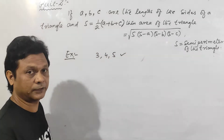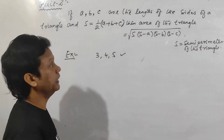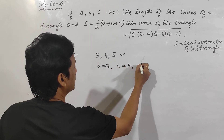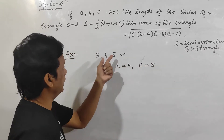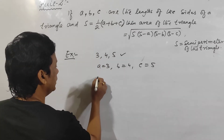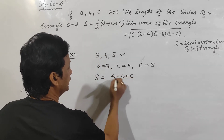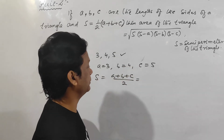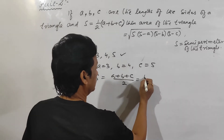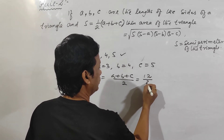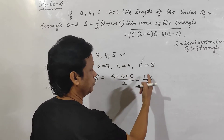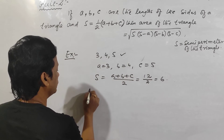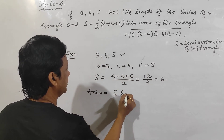Let us find out. Here a is equal to 3, b is equal to 4, and c is equal to 5. You can label them a, b, c in any order. So s is equal to a plus b plus c divided by 2, which gives us 3 plus 4 plus 5 equals 12, divided by 2 equals 6.